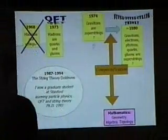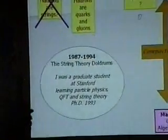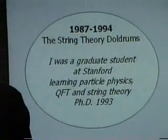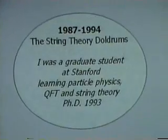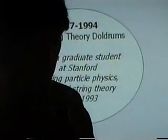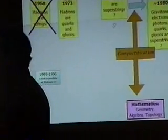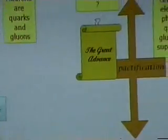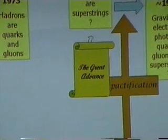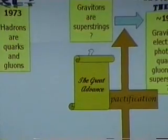That's where things were in 1987 or 1988, when I went off to be a graduate student. This was what one might term the string theory doldrums, and it lasted a few years — pretty much my entire graduate career. I was at Stanford, learning particle physics, quantum field theory, and string theory, and my PhD was about applications of string theory techniques for quantum field theory calculations. They really didn't make a lot of progress until a little bit later, when I went off to be a postdoc at Rutgers University in 1993. Right about that time, at Rutgers and at Princeton, began what one might term the great advance — sometimes called the third string revolution.